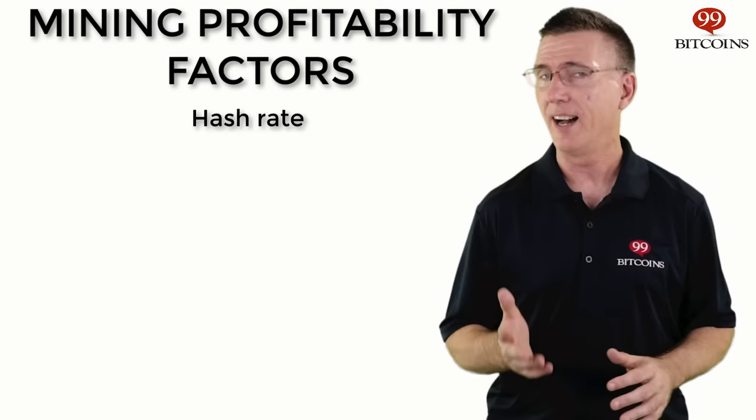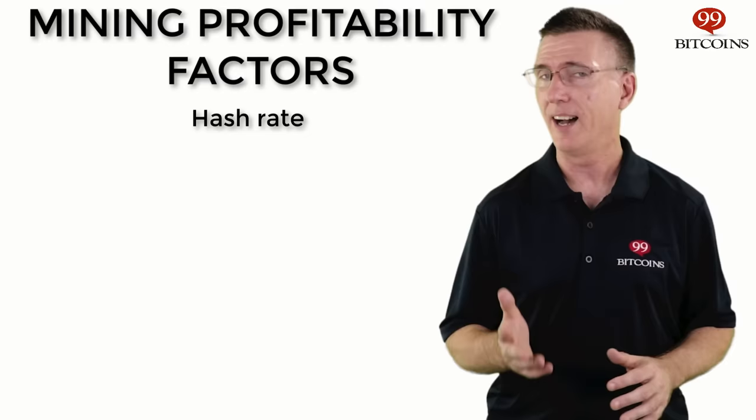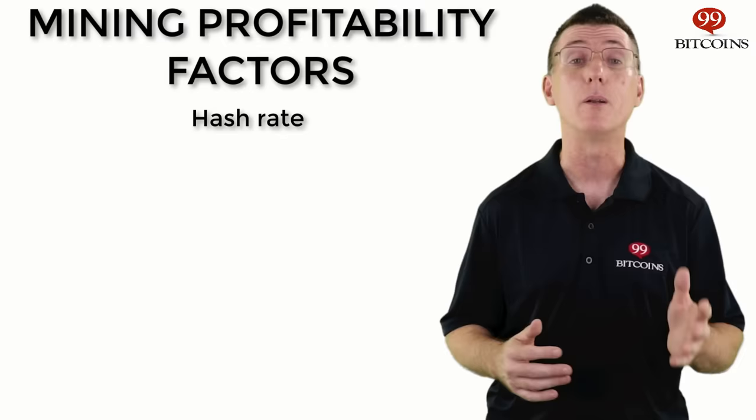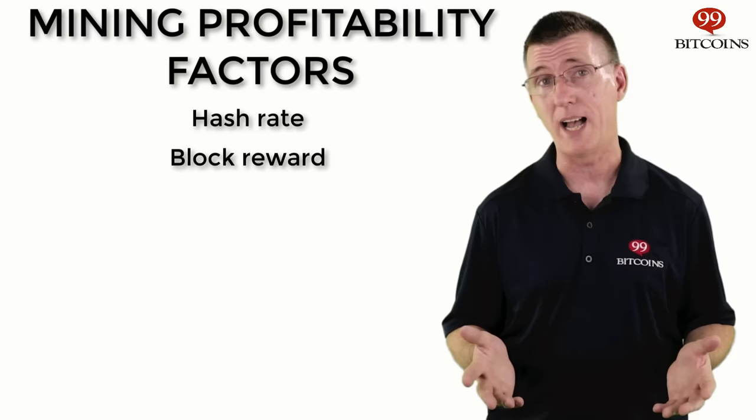Number one: your hash rate. A hash is the mathematical problem the miner's computer needs to solve. The hash rate refers to your miner's performance — how many guesses your computer can make per second. Hash rate can be measured in mega hash per second, giga hash per second, tera hash per second, and even peta hash per second.